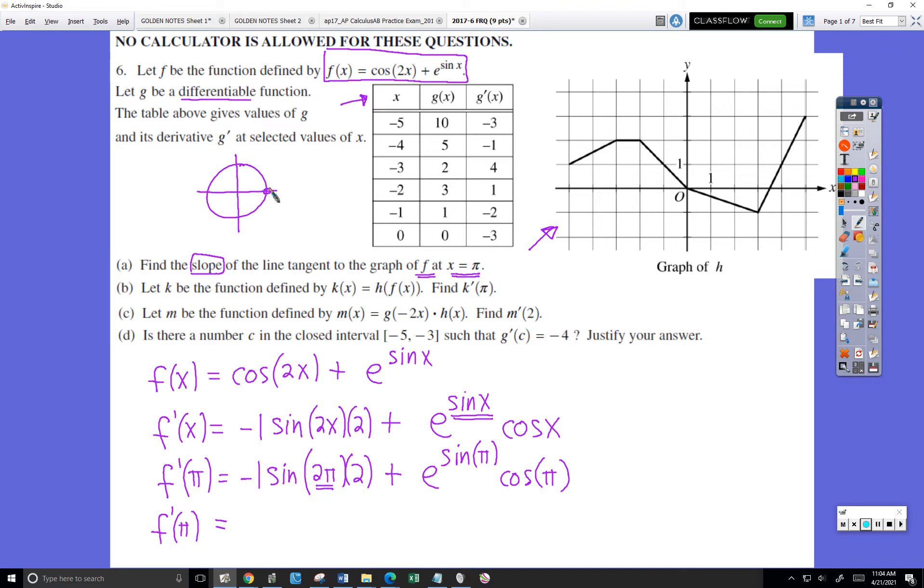2π is right here, sine is the up and down, therefore this has a value of zero. So that's going to give me zero. Plus the sine of π would be here, that's also zero.